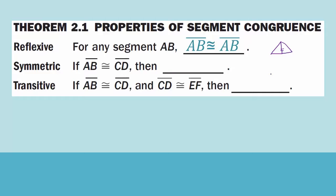Symmetric: if line segment AB is congruent to line segment CD, then line segment CD is congruent to line segment AB — they just switch places. Transitive: if line segment AB is congruent to line segment CD, and line segment CD is congruent to line segment EF, then we can get rid of the middleman CD and just say that line segment AB is congruent to line segment EF.